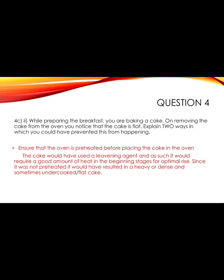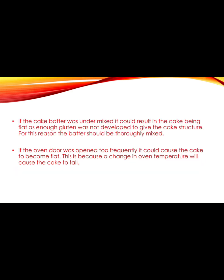Question 4d: while preparing breakfast you are baking a cake — on removing it from the oven it is flat. Explain two ways you could have prevented this. First, ensure the oven is preheated before placing the cake inside, because the leavening agent — whether baking powder or baking soda — requires good heat in the beginning stages for optimal rise. Without preheating, the result is a heavy, dense, or flat cake.